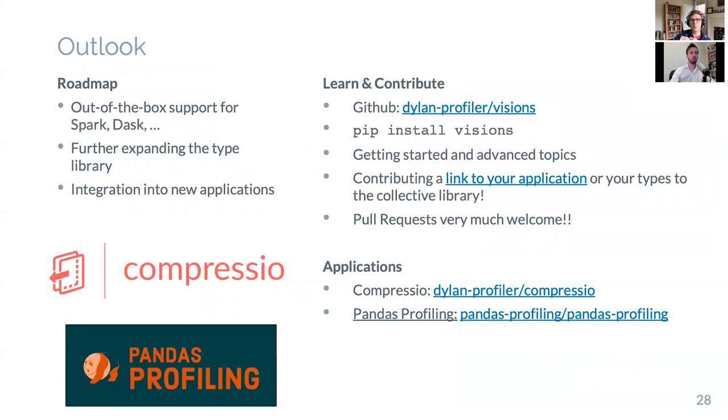Looking forwards, we plan to incorporate Spark and DASC out-of-the-box support in the coming future. Obviously, we're always continuing to expand our type library and default typesets, all of which are available, a simple import from the package. And we'll be looking to further integrate into a number of applications. If you're interested, you can find out more on GitHub, so dylanprofiler backslash visions. Everything is accessible on PIP, so you can get started tomorrow. But if you're interested in contributing or adding an application or seeing if this could work for your application, please feel free to reach out to us or make a pull request. Both are always extremely welcome.